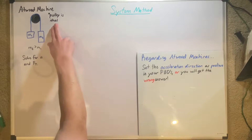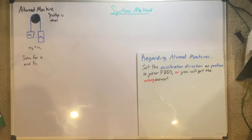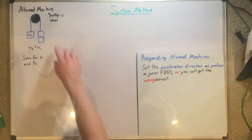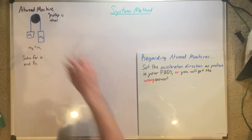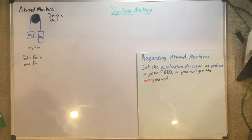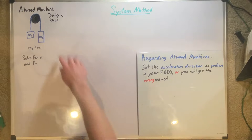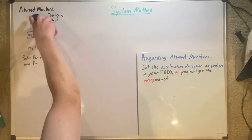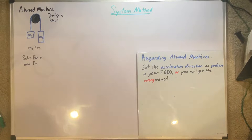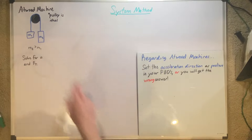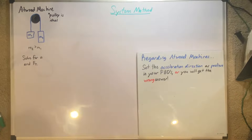One thing we know is that the pulley is ideal. Ideal just means that there's no energy loss or friction on this pulley, and there's no mass to that pulley. It just means that the fact that they're on a string has nothing to do with how the calculations will go. You will just have these two masses and whatever force is applied to them.